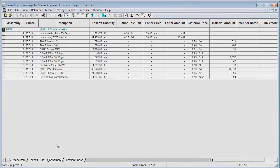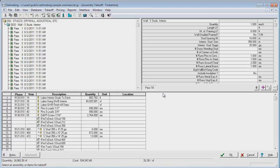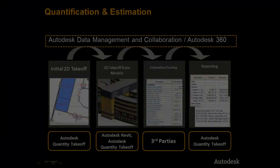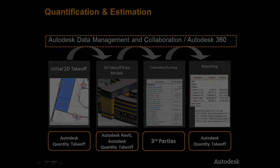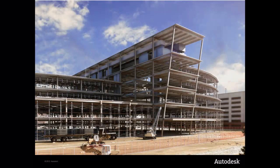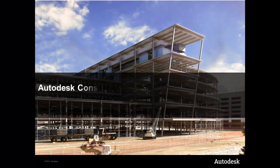Whether working with models or 2D sheets and images, accurate quantities can be extracted. You have the ability to cross-reference items, further validating the data and increasing your confidence in the project totals. Moving from paper-based quantification to a digital process brings with it increased efficiency, with quantities tied directly to the design. The Autodesk Construction Solutions enable you to use systems already in place, but bring a more intelligent and streamlined approach to the quantification and estimating process.